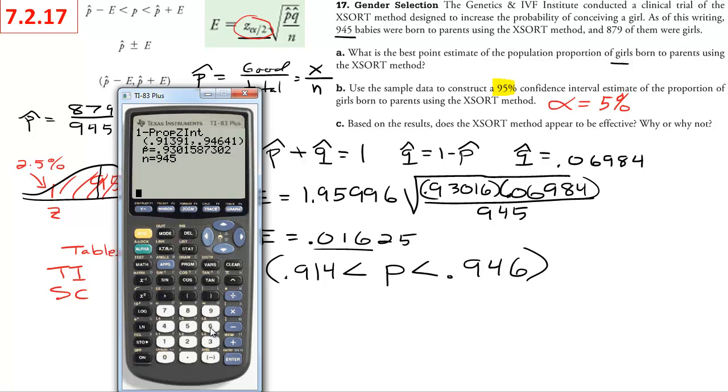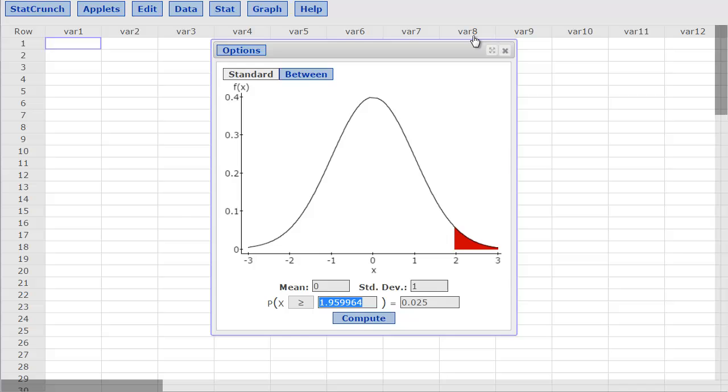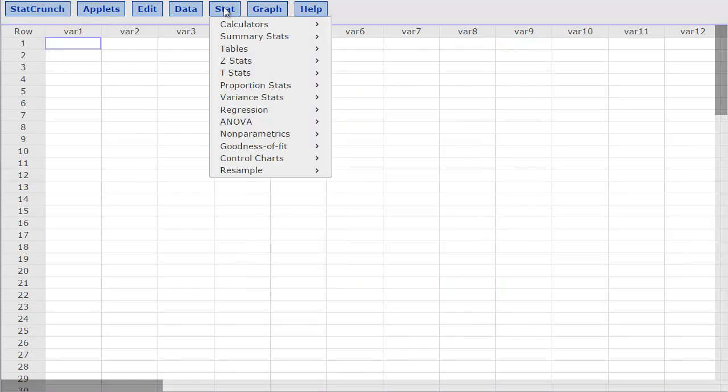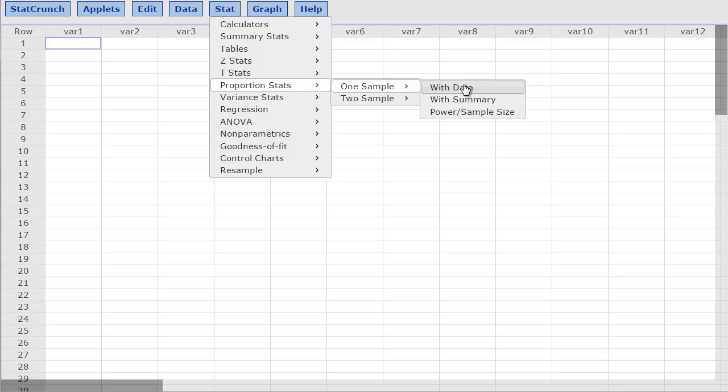The last type of technology we could use to do this would be StatCrunch. Equally as simple. Go back to our stat menu, and now we are doing proportion stats. We had one sample. We didn't have raw data. We had a summary.